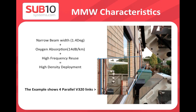A real-world example of dense deployment: at the back of our building, we have a test frame where four units are mounted, each connecting to the opposite side running four parallel 320 megabit links. The antennas are only about 10 centimeters apart. These links run concurrently without affecting each other — this is live real communication, not just a demonstration.